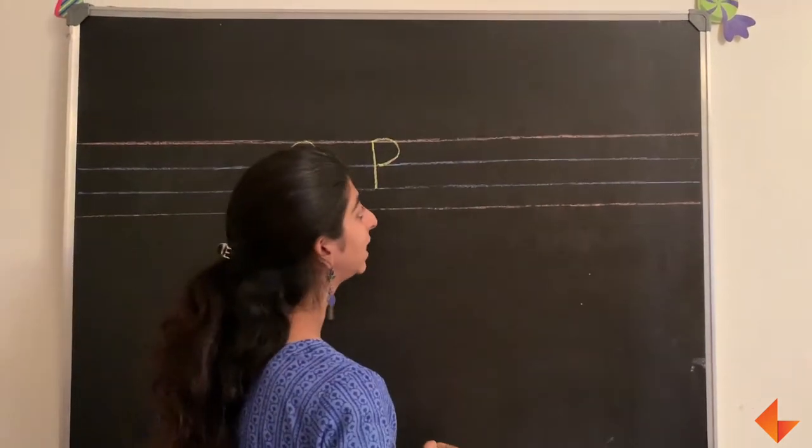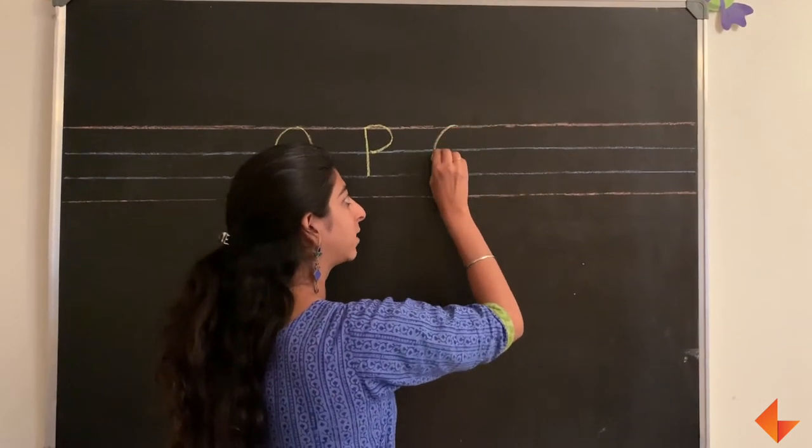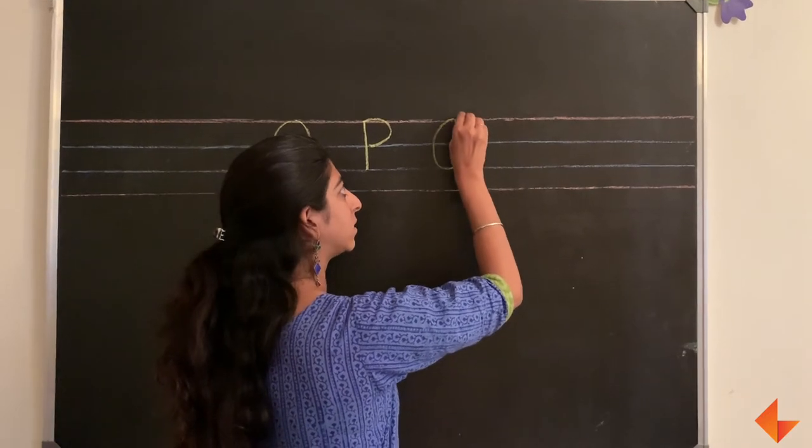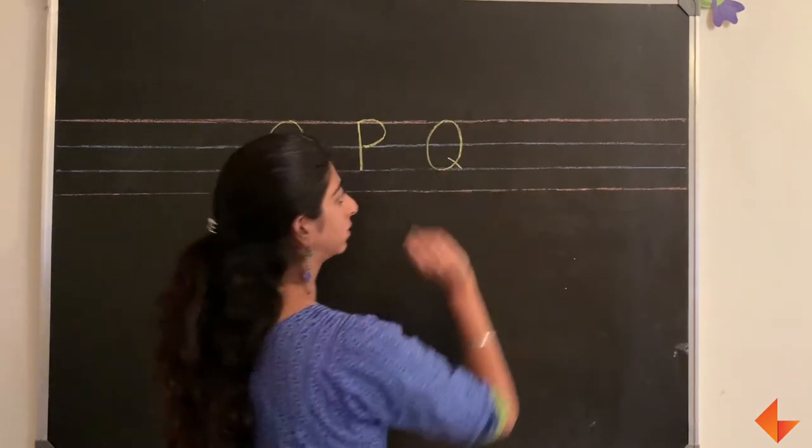To write the letter Q, like O, start from the top and make a circle. At the bottom make a small slanting line.